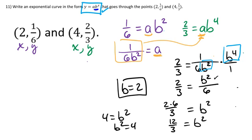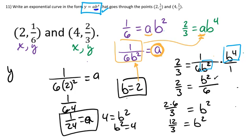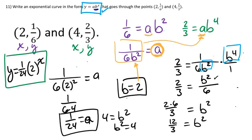Now I can find a using the expression a equals 1 over 6 times B squared. Plugging in B equals 2: a equals 1 over 6 times 2 squared, which is 1 over 6 times 4, which equals 1/24. So the answer is y equals 1/24 times 2 to the x power.